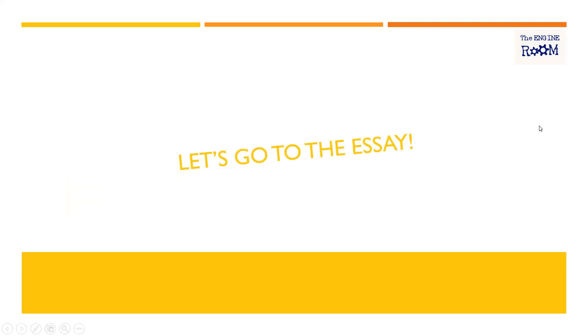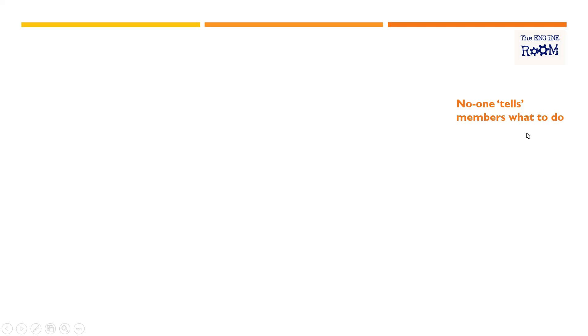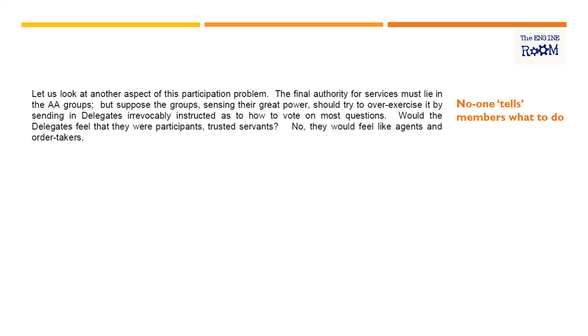Let's go to the essay. 'No one tells members what to do' — and it's interesting, if you go to the AA website right now and look at the newcomers section, it literally says no one's going to tell you what to do or ask you a whole bunch of questions. That flavour of AA is reflected here in Concept Four. Bill writes: 'Let's look at another aspect of this participation problem. The final authority for services must lie in the AA groups, but suppose the groups, sensing their great power, should try to over-exercise it by sending in delegates irrevocably instructed as to how to vote on most questions. Would the delegates feel they were participants, trusted servants? No — they would feel like agents and order takers.'